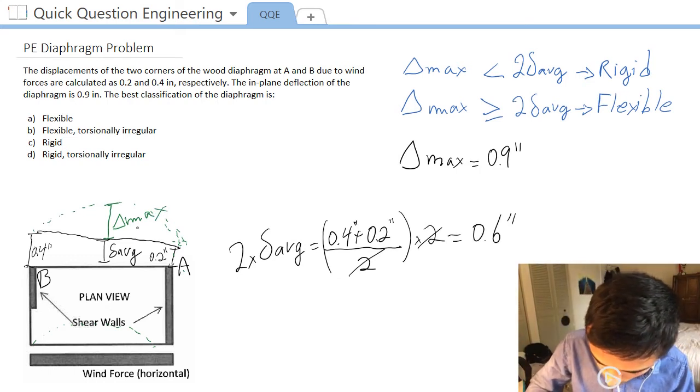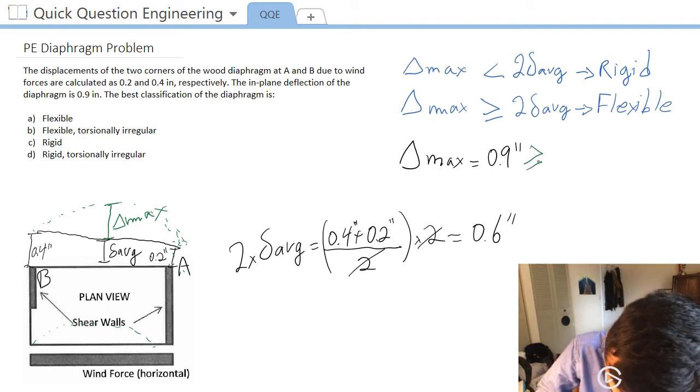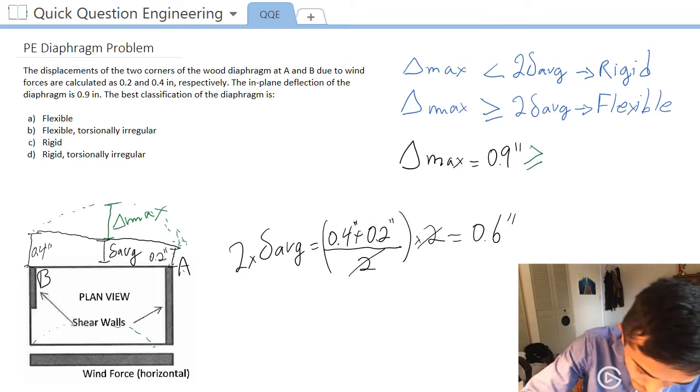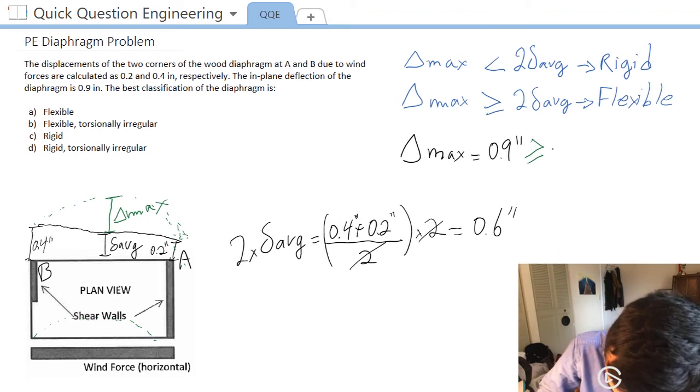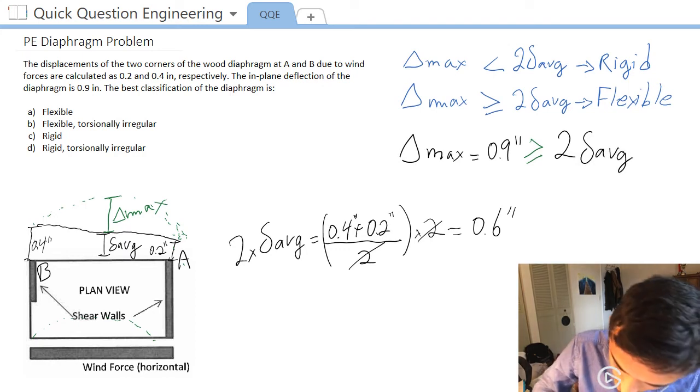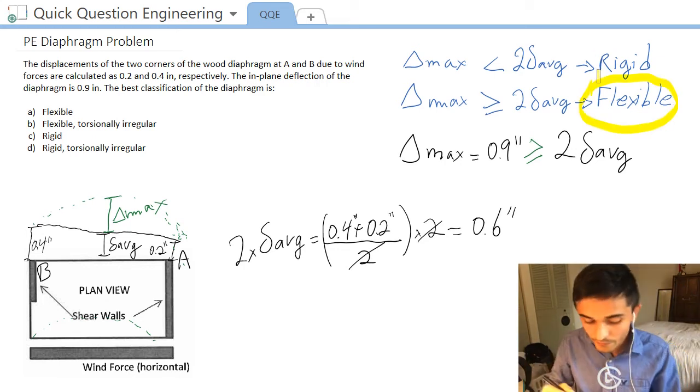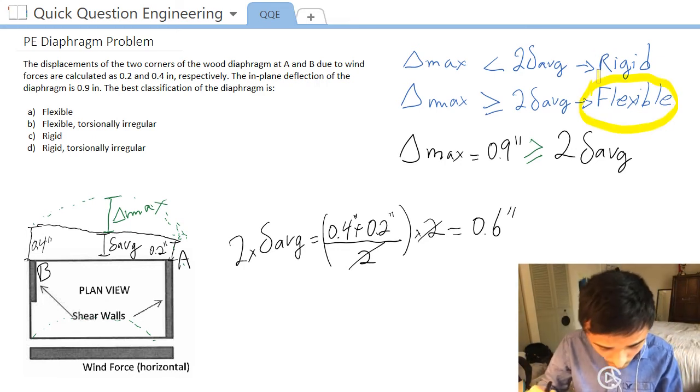So our delta max is 0.9, which is greater than two times, greater than two times delta average. So our diaphragm at the end of the day, it is, there you go, flexible.